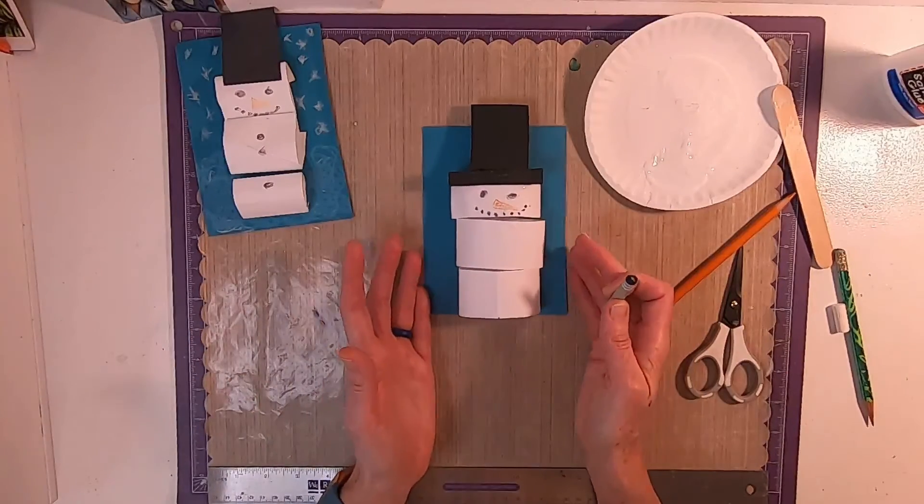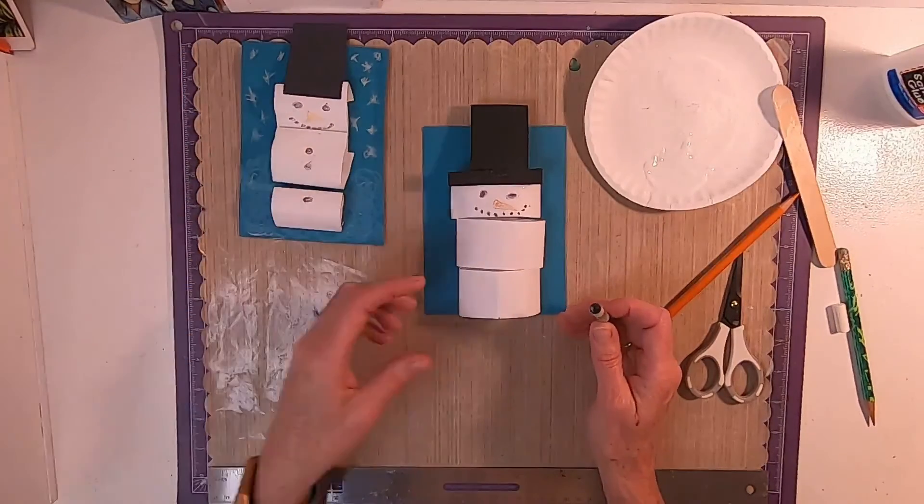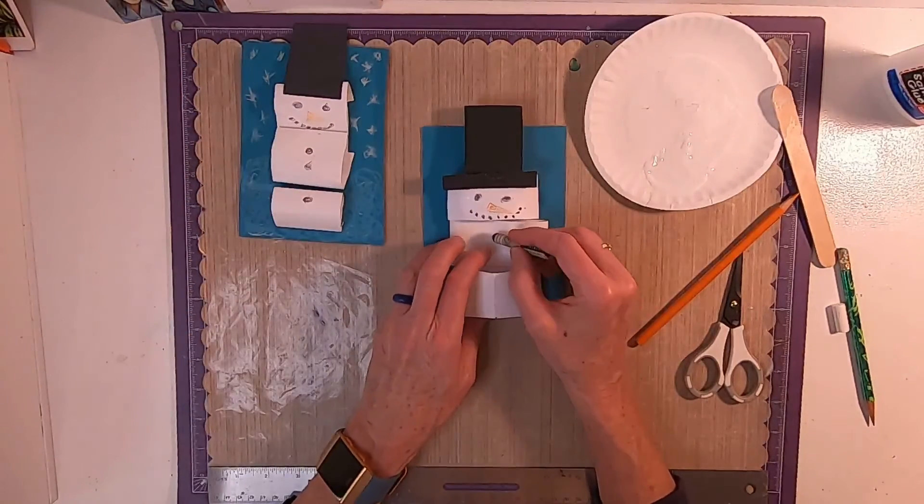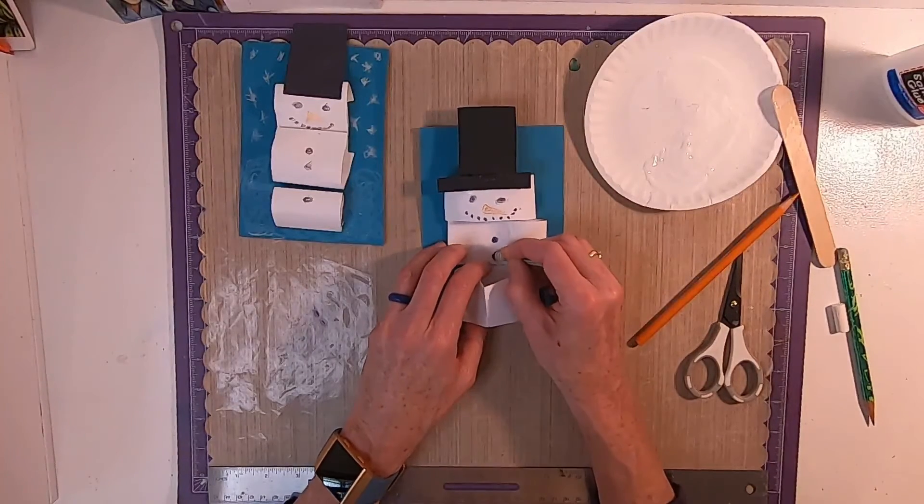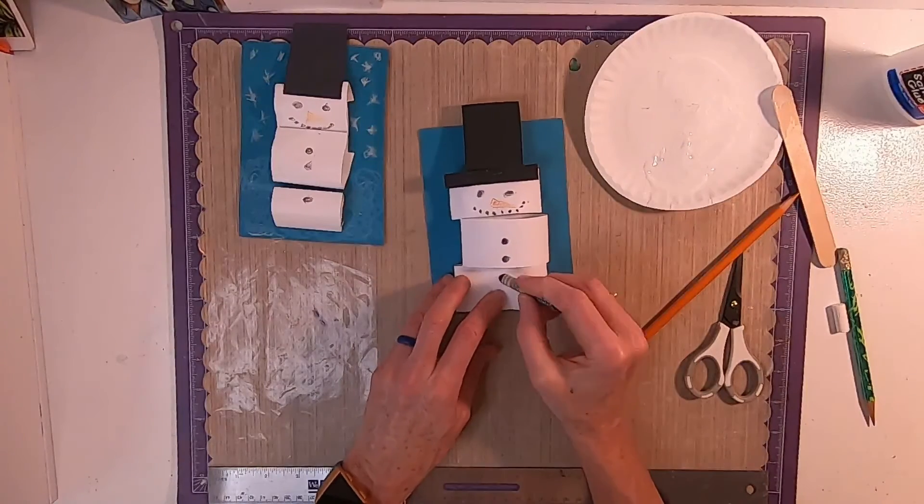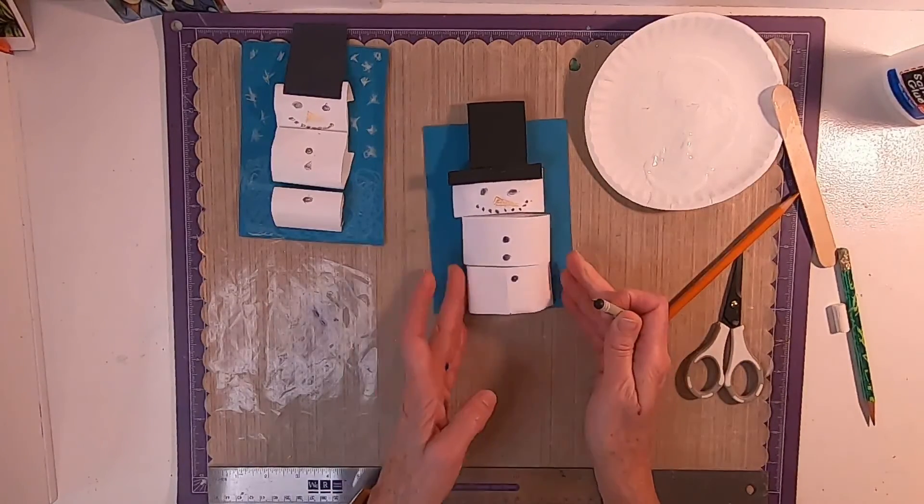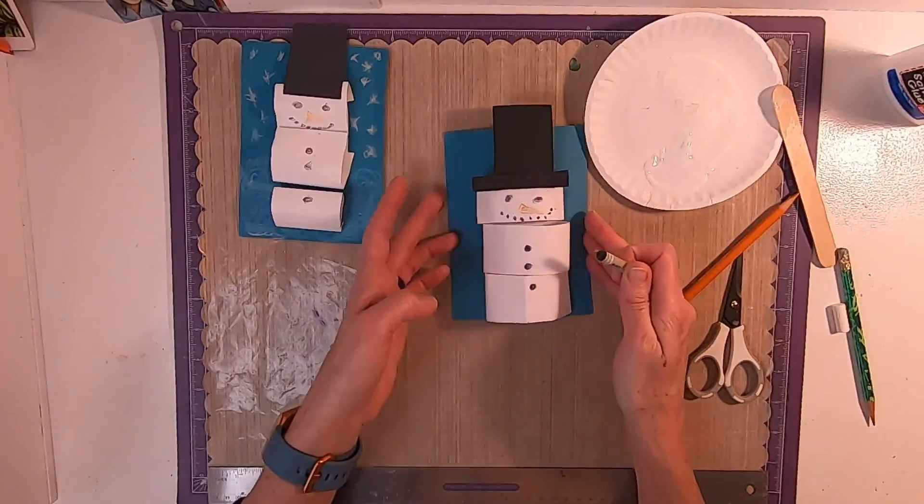He's coming together, isn't he? Then, Miss Kim has made what? Buttons! So, let's put three or four buttons, whatever you want to do. One, two, on the middle one. Then, let's come down to the bottom and add one button at the top. Look at that! Here's our snowman!